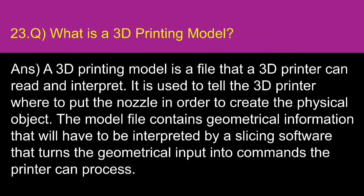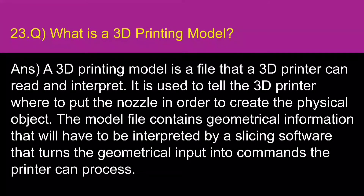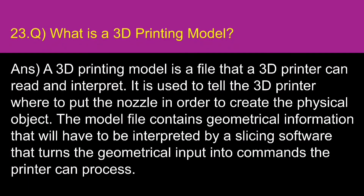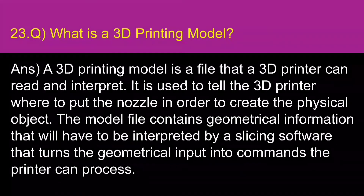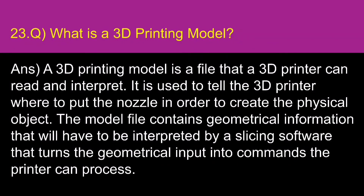What is a 3D printing model? A 3D printing model is a file that a 3D printer can read and interpret. It is used to tell the 3D printer where to put the nozzle in order to create the physical object. The model file contains geometrical information that must be interpreted by slicing software, which turns the geometrical input into commands the printer can process.